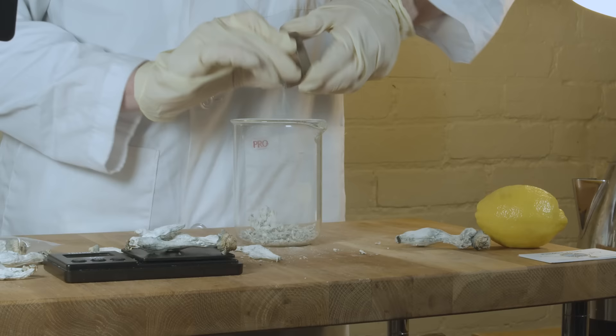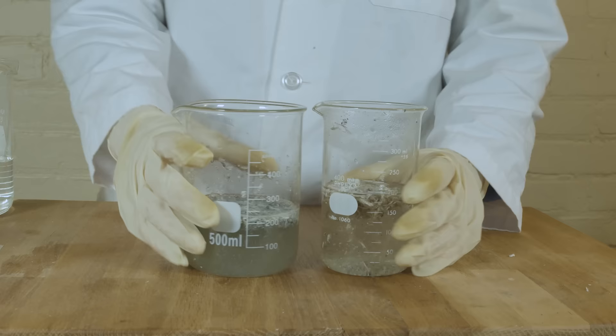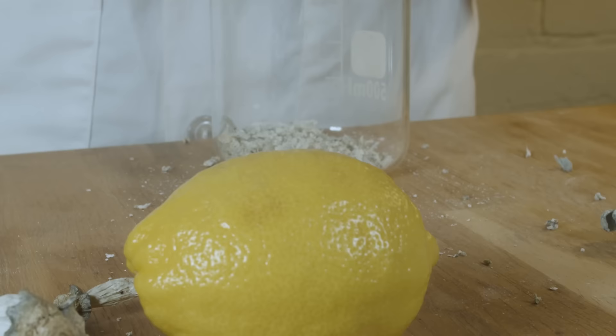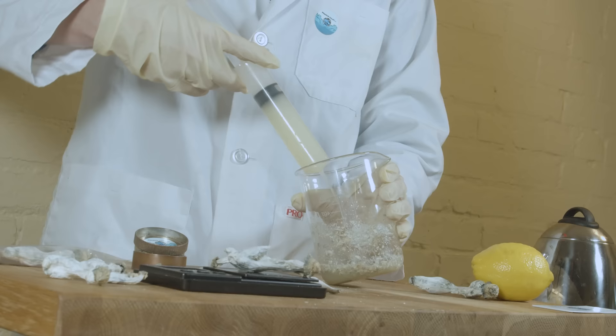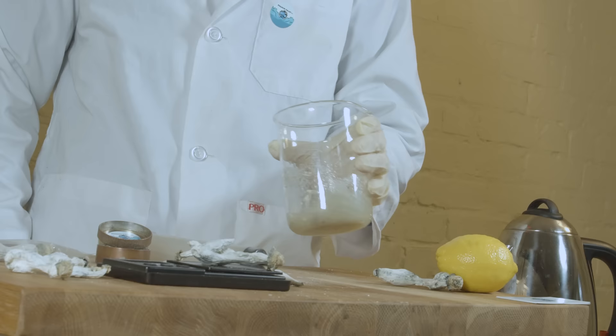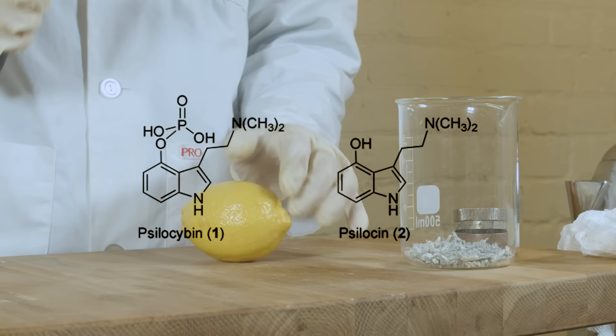So now we're going to move on to the actual extraction process, and this is where it kind of diverts from your typical cup of tea. Our goal here is we want to pull as much of the medicinal ingredients out of the mushroom as possible. So tip number two is to use lemon. A lot of people have heard of the Lemon Tek method, in which an excessive amount of lemon juice is used, and I think this is totally unnecessary.